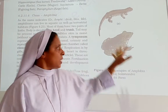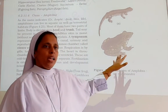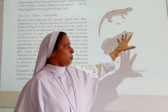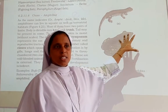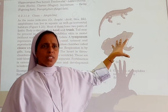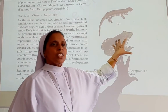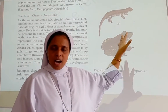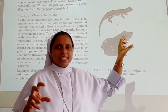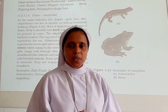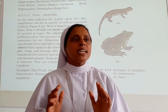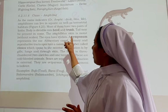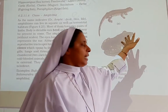The body is divided into head and trunk region. Amphibians do not have scales; instead they have moist, moisturized skin. They possess moist skin rather than scales.